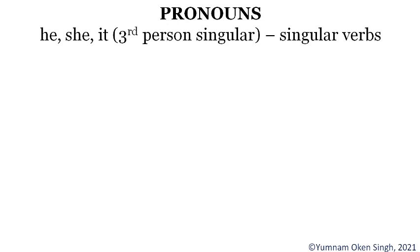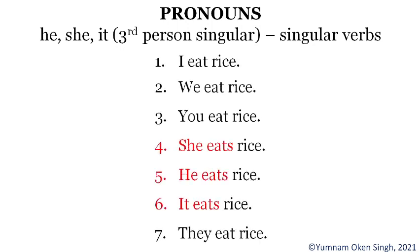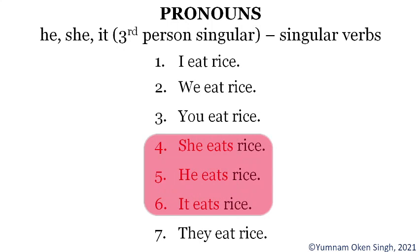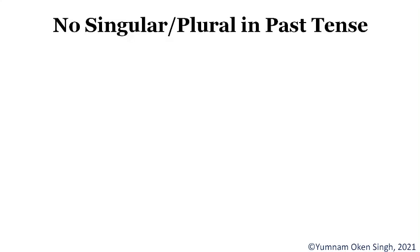Coming to pronouns, the third person singulars — that is he, she, or it — these are the only three pronouns that take singular verbs. Looking at seven example sentences, numbers four, five, and six have subjects with third person singular: she, he, and it. These are the only ones that take singular verbs. The rest take plural verbs, including 'I' even though it refers to a single person.